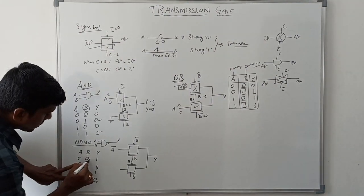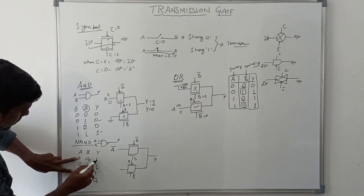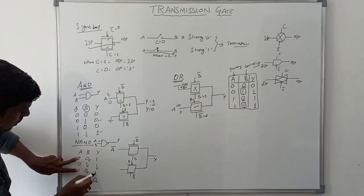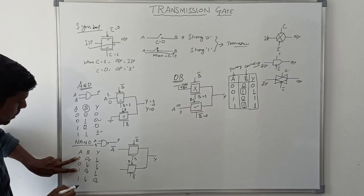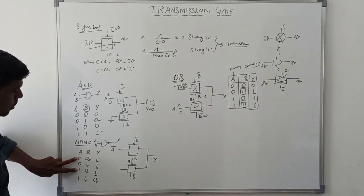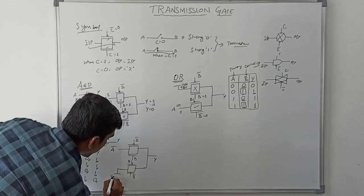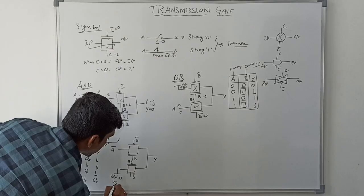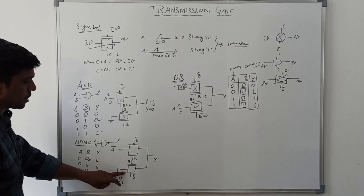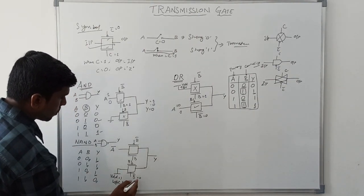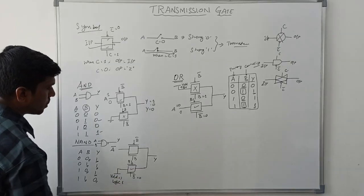For the second case, when B equals 0, A equal to 0 gives Y equal to 1, and A equal to 1 gives Y equal to 1. So irrespective of A value, the output is 1. The second transmission gate is connected to VDD, representing logic 1. Whenever B-bar equals 0 (i.e., B equals 0), this transistor turns on and this logic 1 is transferred to the output side.